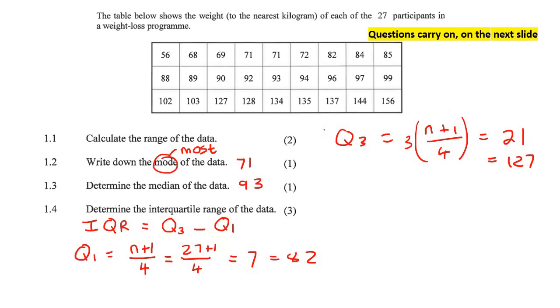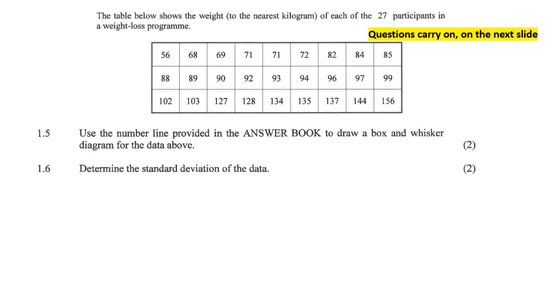So we have Q3 and we have Q1. So now we can say the interquartile range is just going to be 127 minus 82, and that would be 45. Moving on.